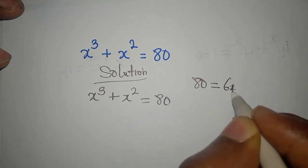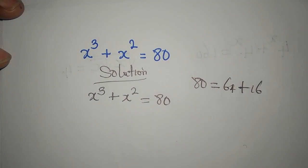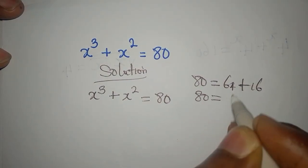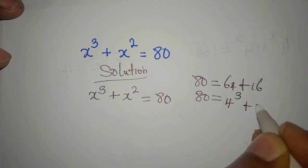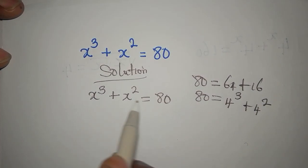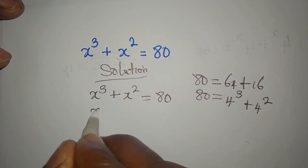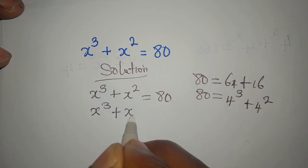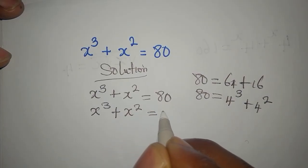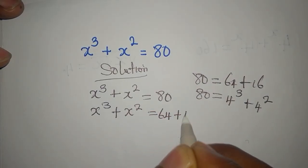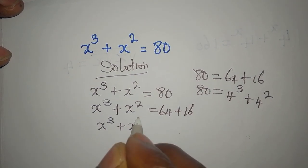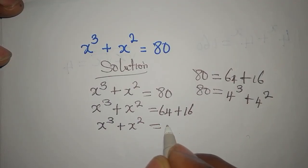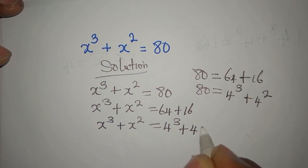80 is the same thing as 64 plus 16, and that means 80 is the same as 4³ plus 4². So we write x³ + x² equal to 64 plus 16, then x³ + x² is equal to 4³ + 4².